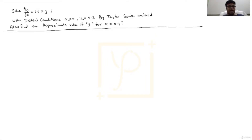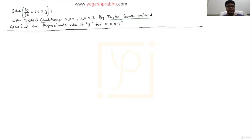In this question we have a differential equation and we have to solve it using the Taylor series method. There are initial conditions given: x naught is equal to 0 and y naught is equal to 0.2. We also need to find the approximate value of y when x is equal to 0.4.